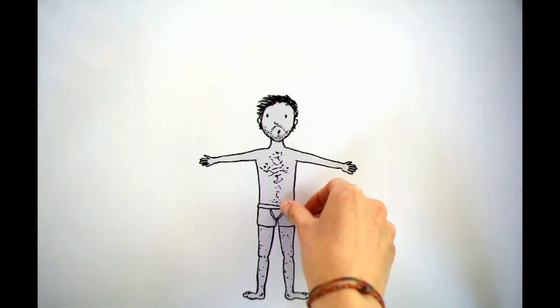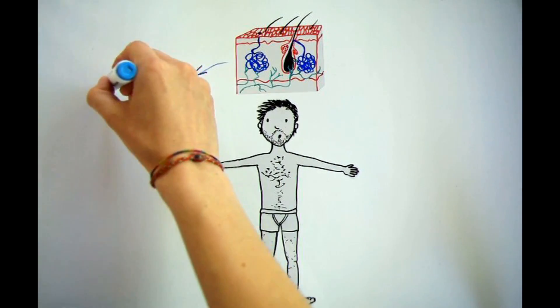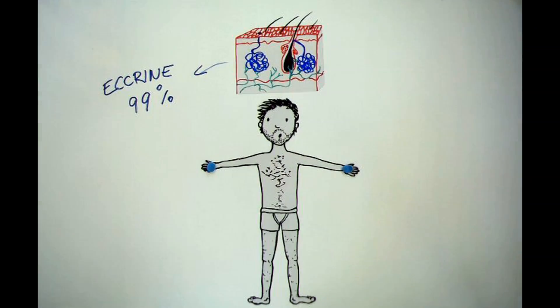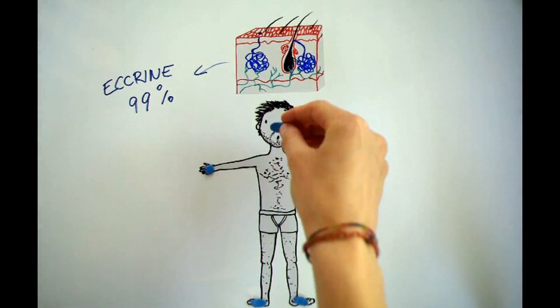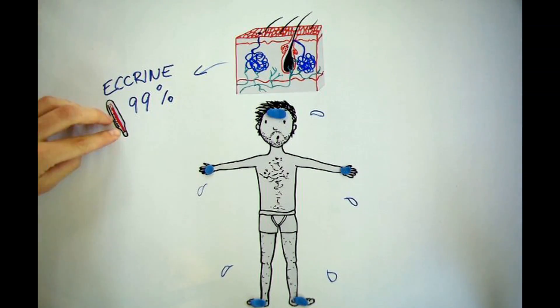Our sweat is made in two types of glands found in the skin: eccrine and apocrine glands. Eccrine glands cover 99% of our skin and produce odorless sweat. Their distribution is highest on our palms, soles and forehead, and these glands are crucial for thermoregulation.